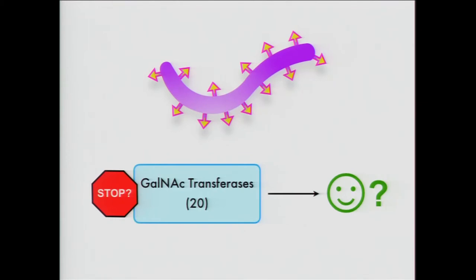Glycosylation happens all the time in your body, even when you're healthy, but the virus hijacks this process and uses it to add this coating onto the surface of its spikes. This coating on the surface of the spikes is actually the part of the virus that does the most damage to your blood vessels.